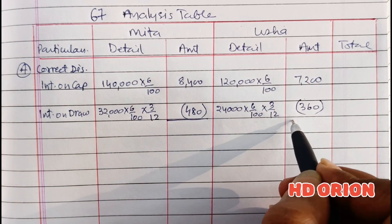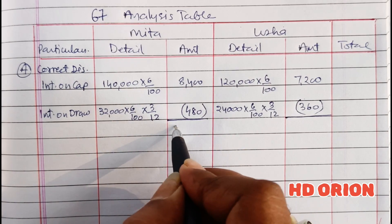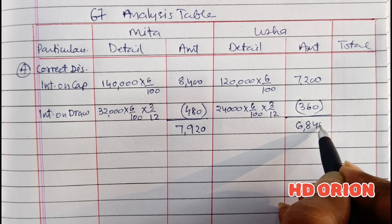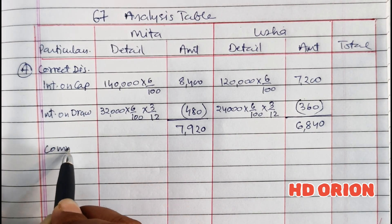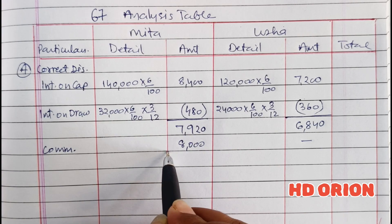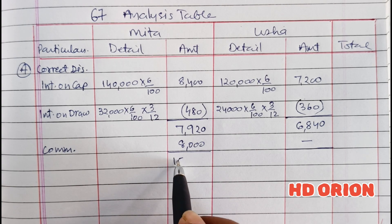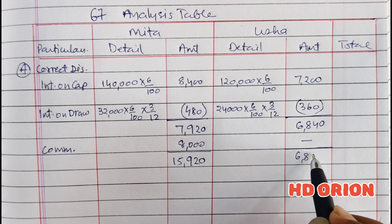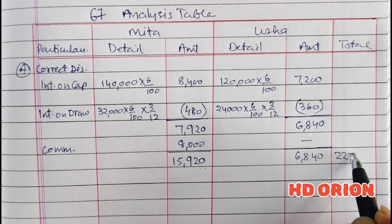So what is the amount a partner should receive? Mita should receive Rs. 8,400 minus Rs. 480, giving Rs. 7,920. And Usha should receive Rs. 7,200 minus Rs. 360, giving Rs. 6,840. But there is one more item — commission of Rs. 8,000 to be paid to partner Mita, which the firm had forgotten. So total amount due to Mita is Rs. 15,920 and for Usha is Rs. 6,840. When you add these two amounts, you get Rs. 22,760.